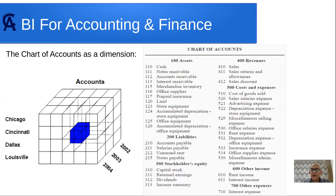First of all, the chart of accounts is really nothing but a list of accounts we have in the financial statements. In the balance sheet we have assets, liabilities, and equity. Assets have sub-accounts - usually split into at least current assets and long-term assets. Yesterday we saw the concept of drill-down and roll-up; let me explain it here using the chart of accounts.